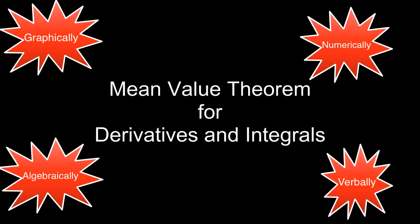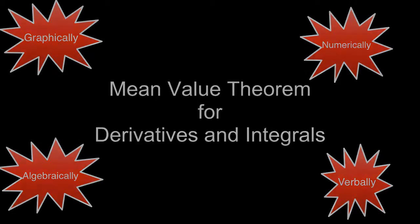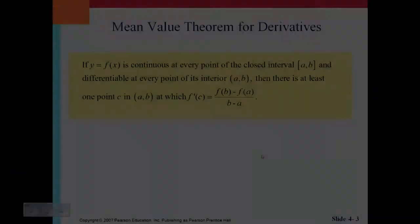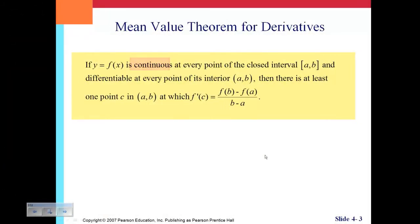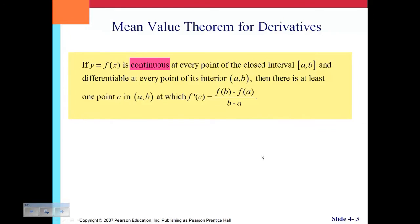Let us begin with reviewing the mean value theorem for derivatives. The mean value theorem states that if a function is continuous on a closed interval and differentiable on an open interval, then a derivative exists at a point c on the function, such that the derivative is equal to the slope of the secant between points a and b.